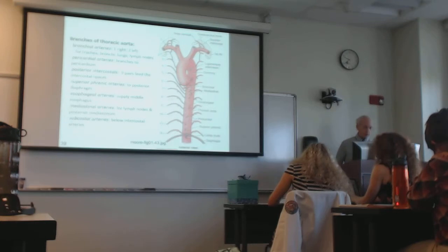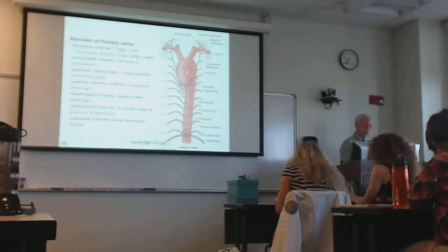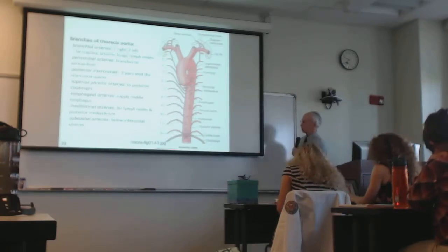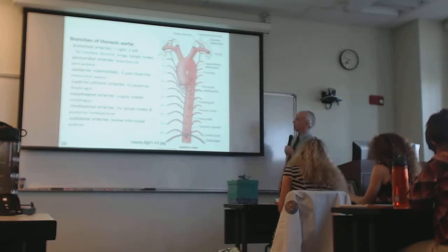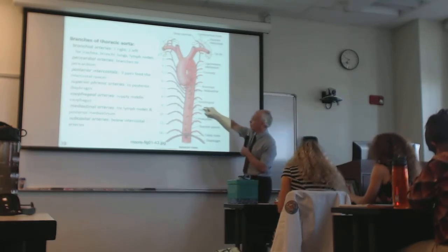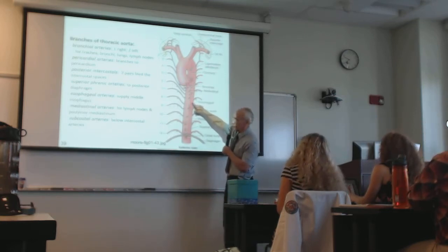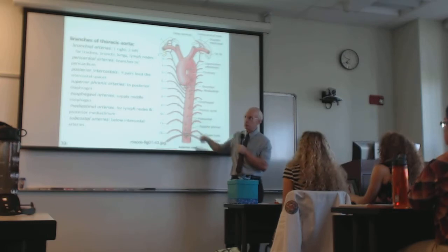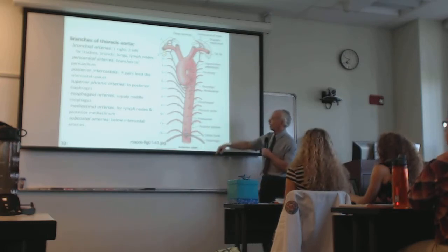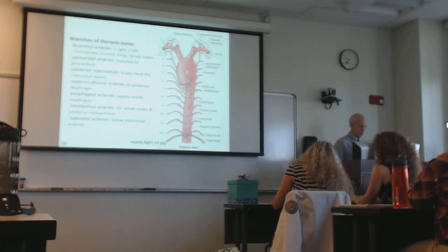The descending aorta branches to supply the intercostal, bronchial, esophageal, and pericardial vessels. An aortic dissection — delamination of the intima from the media — is often grievous because the blood supply to each of those individual vessels branching from the descending aorta is compromised.